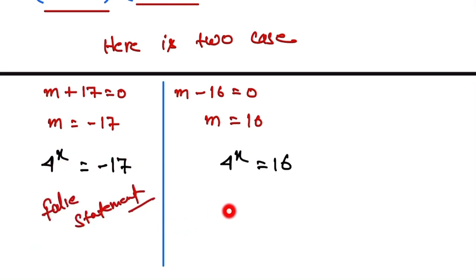So here, 4^x = 16. 16 can be written as 4^2. The base is the same, so we take the common power. Therefore, x = 2, and this is the final answer.